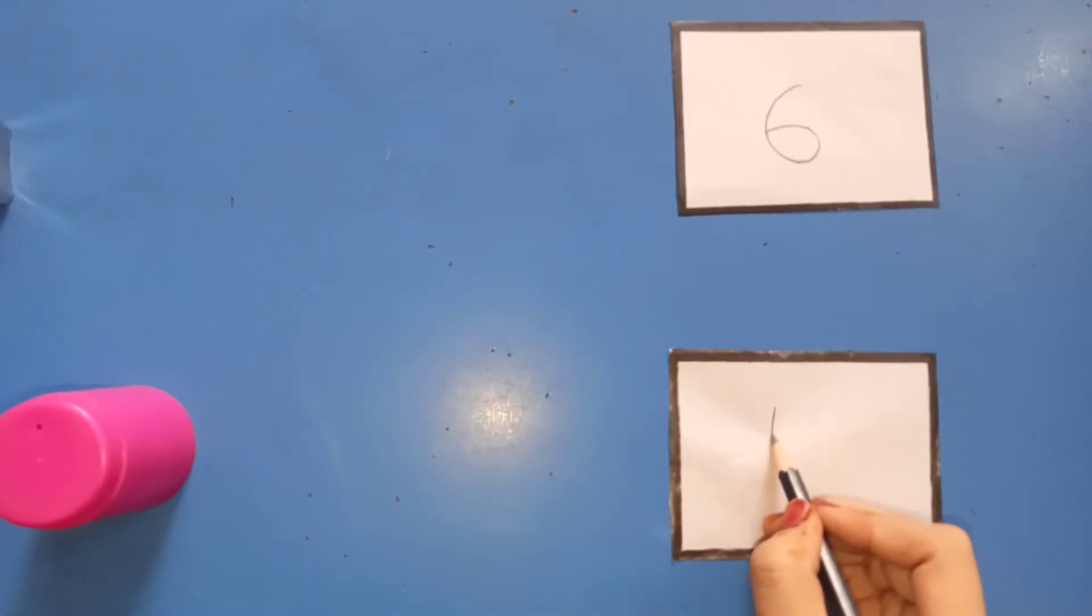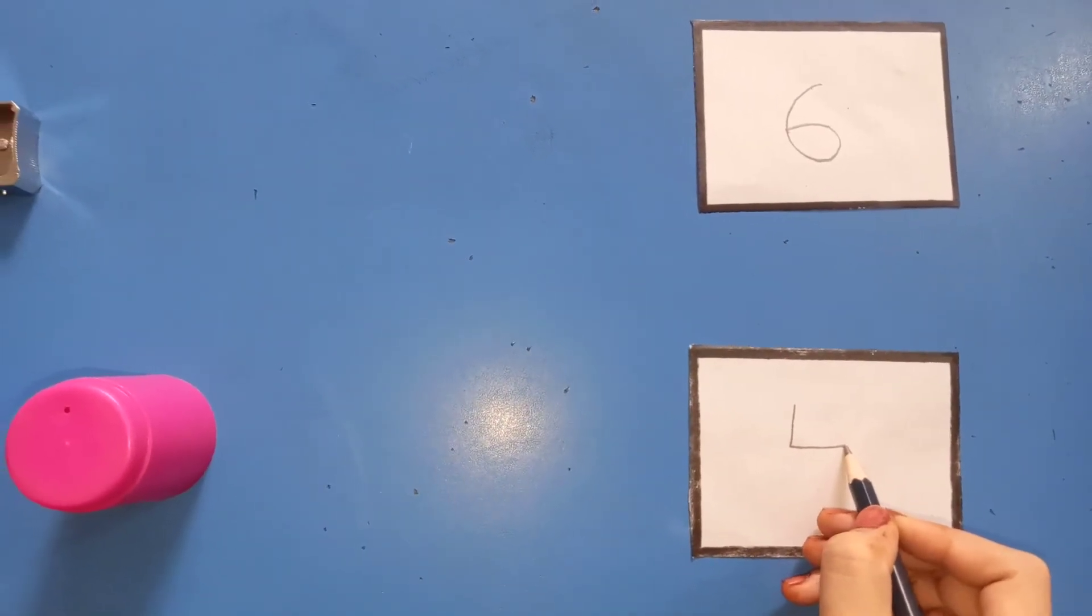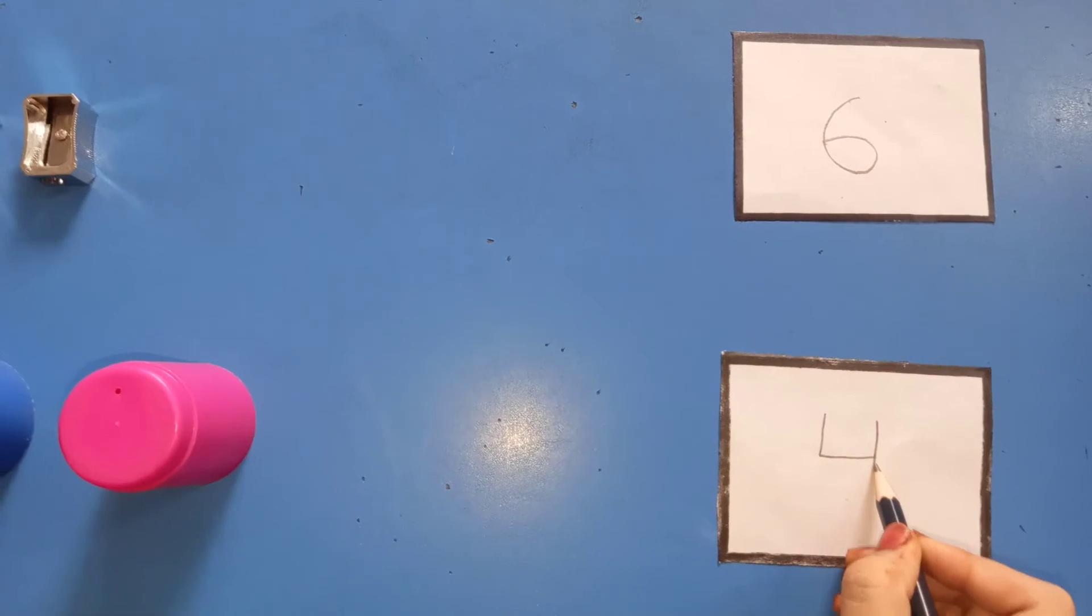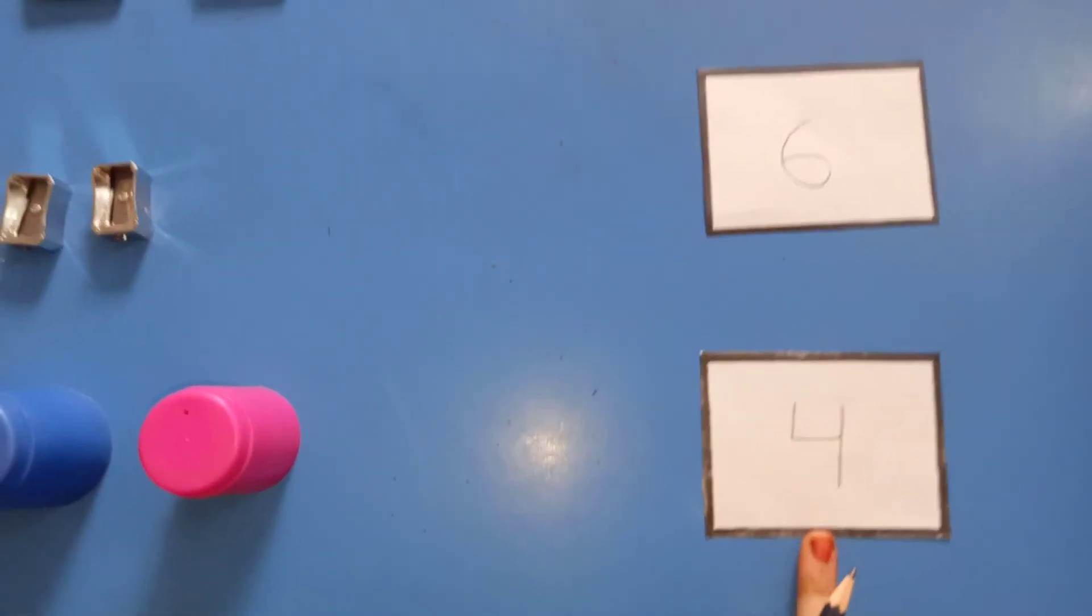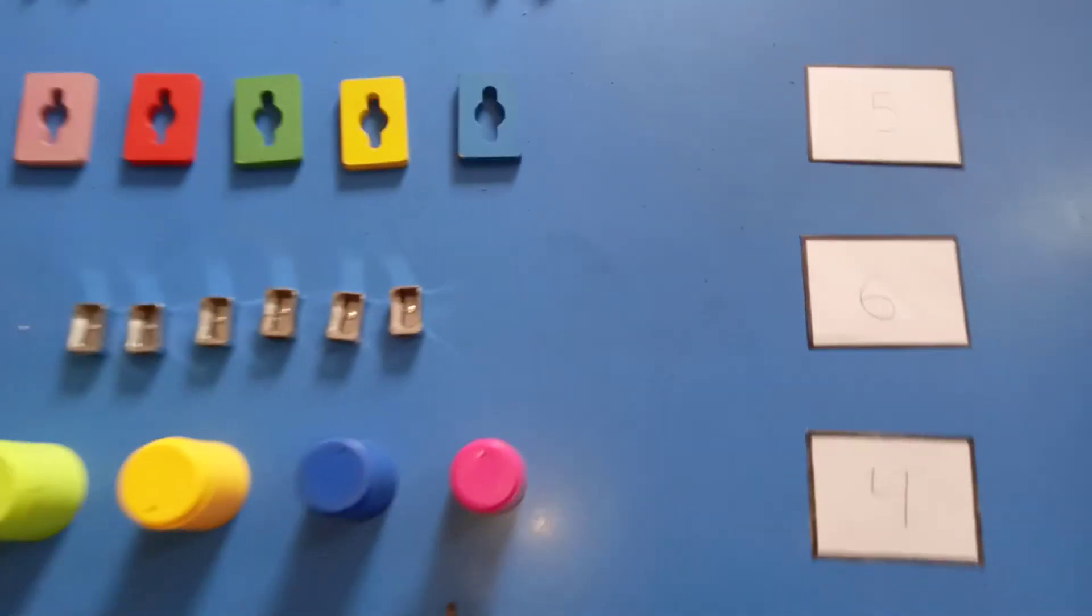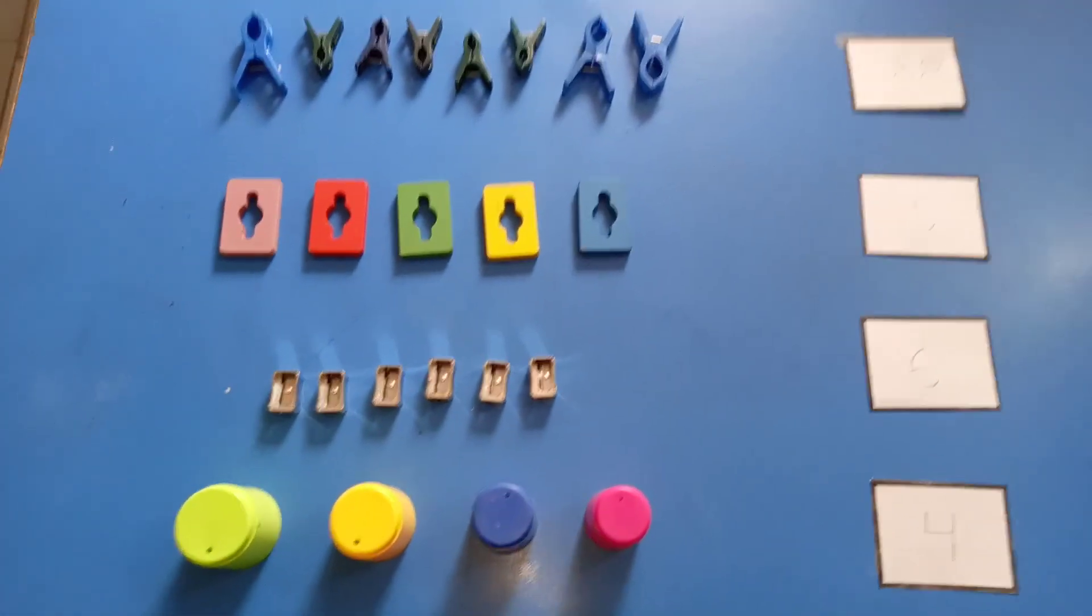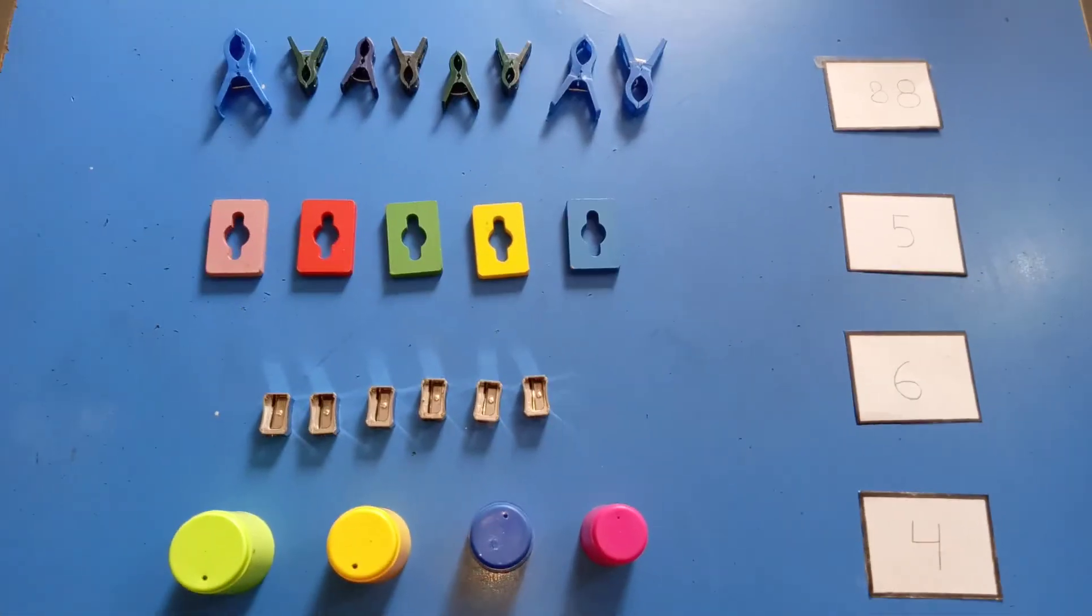Come down, go straight, go up, come down, and down. Four. Okay, Munna. I hope you like this activity. You are welcome.